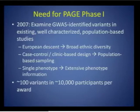Because the focus was on characterizing selected variants in large numbers of participants, the scope of genotyping was envisioned as approximately 100 variants and 10,000 participants for each of four awards.